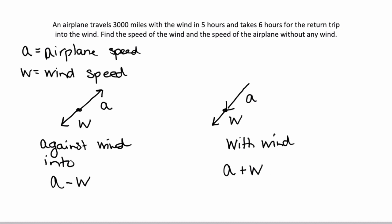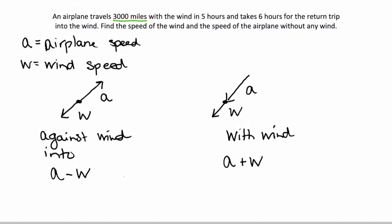Now let's look at our problem to see the information that we're given. So an airplane travels 3,000 miles. Okay, so we know we're going 3,000 miles. And that's going to be the same for both directions, since we're doing a round trip.